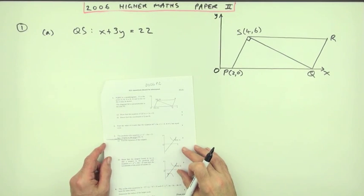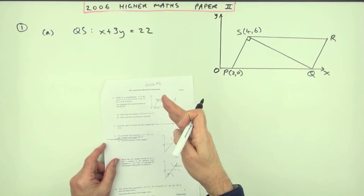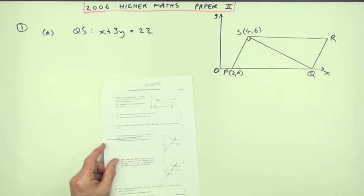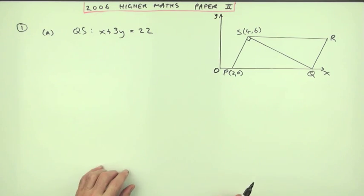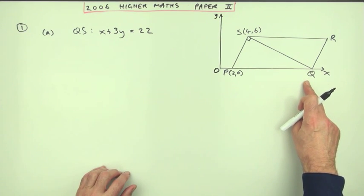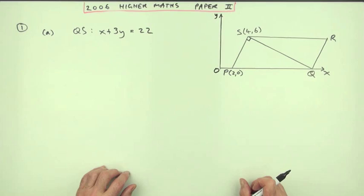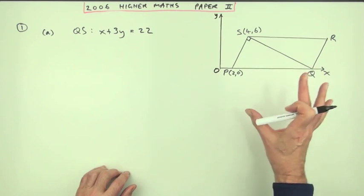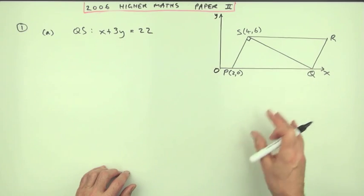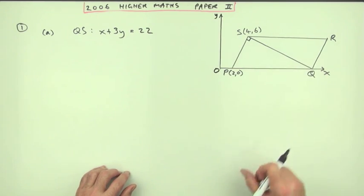Number 1 from the 2006 Higher Maths Paper 2, Lines and Properties of a Parallelogram. Part B asks you to find the coordinates of Q and the coordinates of R, and since this is a parallelogram with a right angle here, that can be done without using the equations of lines at all, just by using distances and translations.